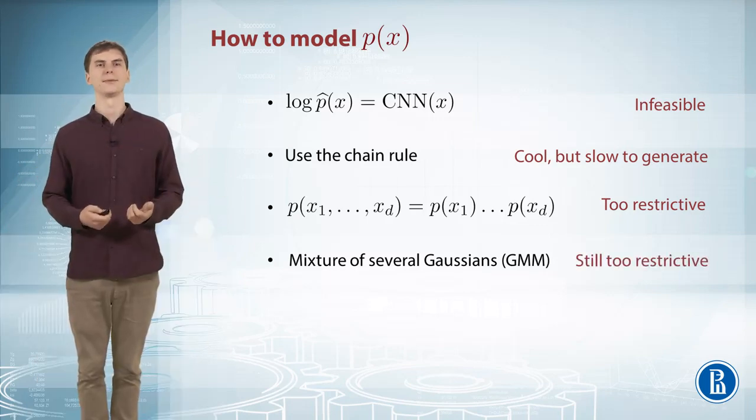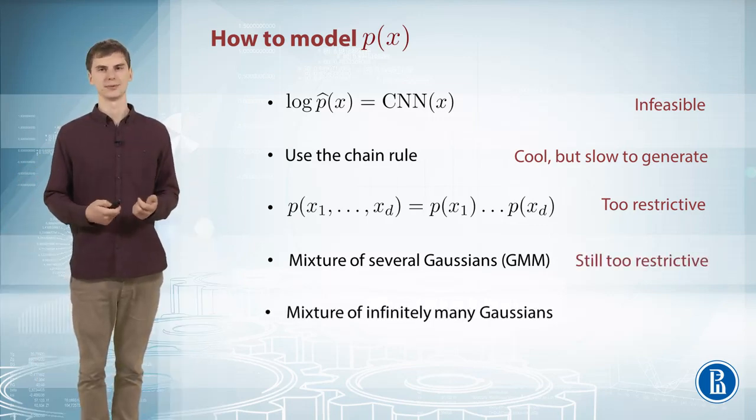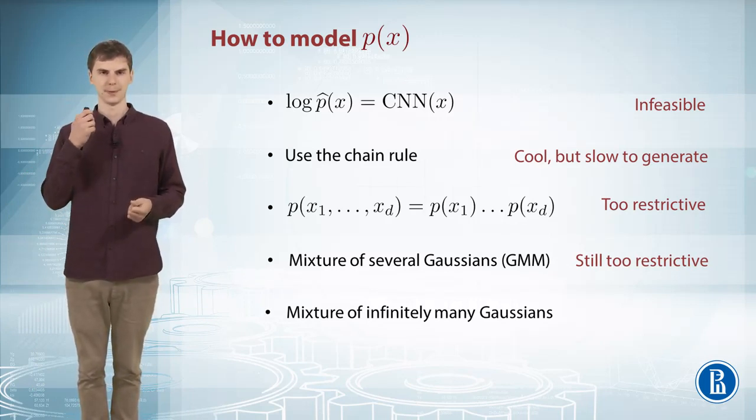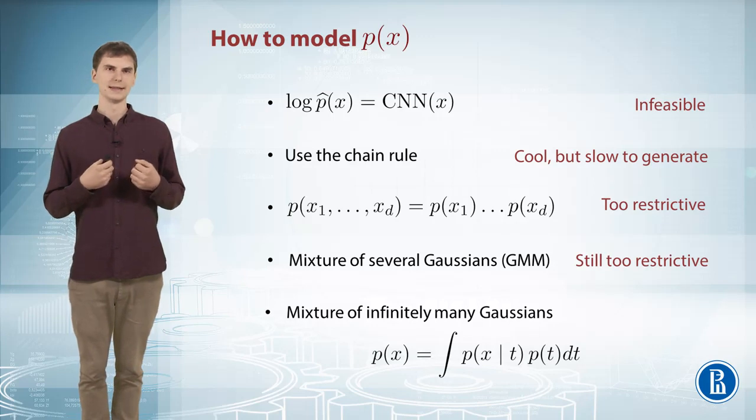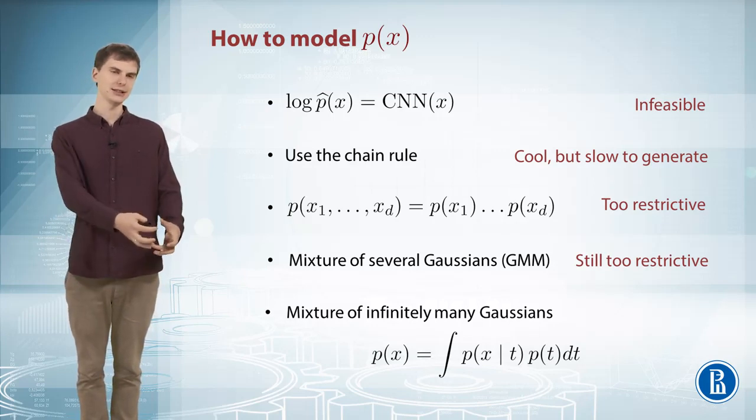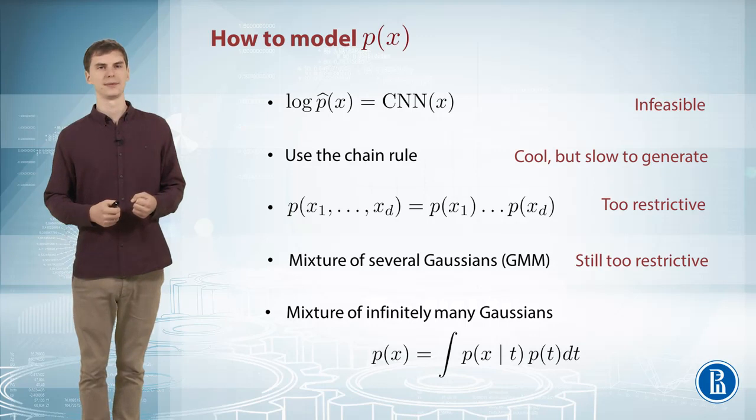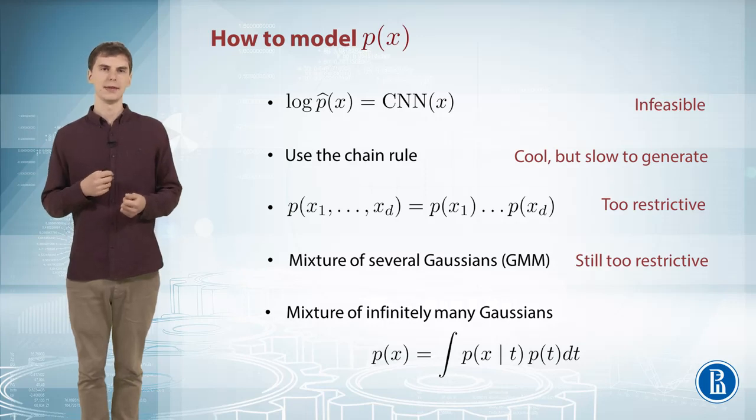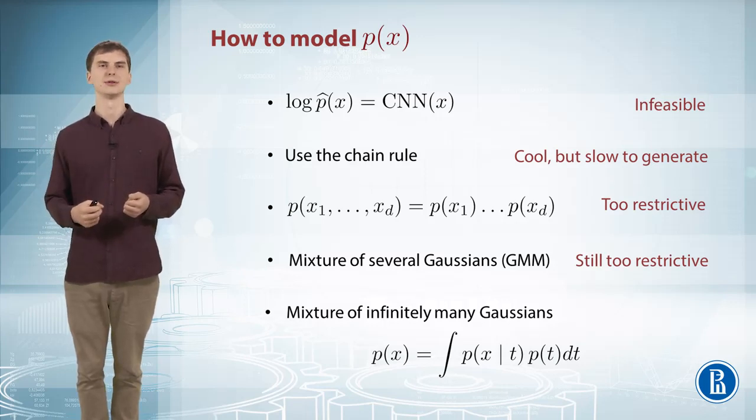One more thing we can try is an infinite mixture of Gaussians, like the probabilistic PCA method we covered in week 2. Here the idea is that each object, each image x, has a corresponding latent variable t. The image x is caused by this t, so we can marginalize out t. The conditional distribution x given t is a Gaussian.